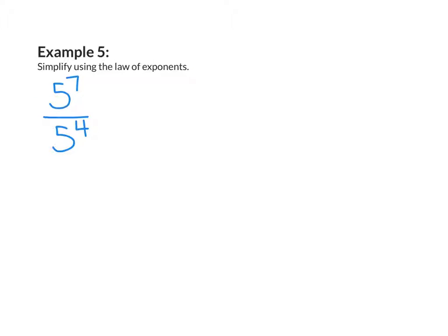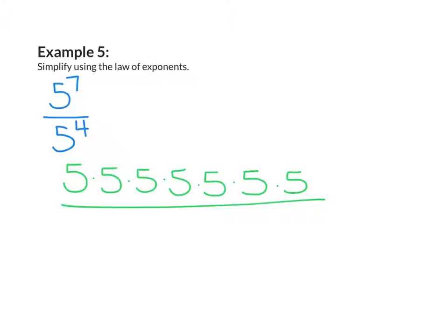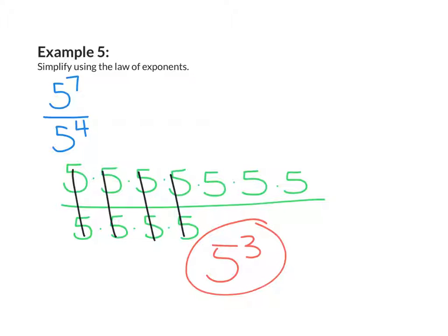Example 5: Simplify using the law of exponents. I have 5 to the power of 7 divided by 5 to the power of 4. So 5 to the power of 7 would be 5 multiplied by itself 7 times, all over 5 multiplied by itself 4 times. I'm going to go ahead and divide — these 5's will cancel out — and I'll be left with 5 to the power of 3. A faster way would have been looking at my exponents, subtracting 7 and 4, and that would give me 3, which is still 5 to the power of 3.